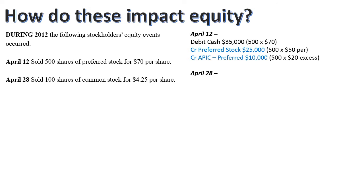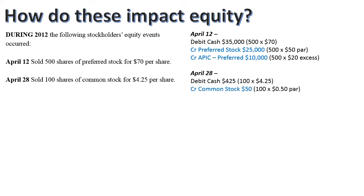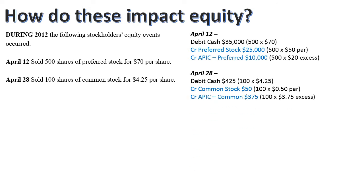On April 28th we sell 100 shares of common stock. Again, figure out cash first: 100 shares at $4.25 gives us $425. The common stock credit is 100 times the $0.50 par, and the excess is our APIC for common. We keep the APIC for preferred separate from APIC for common.